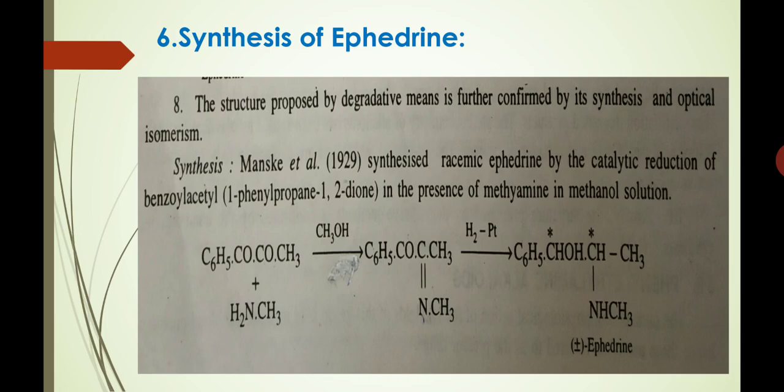The structure proposed by degradative means is further confirmed by its synthesis and optical isomerism. The synthesis was given by Manske and co-workers in 1929. They synthesized racemic ephedrine by catalytic reduction of benzoylacetyl (1-phenylpropane-1,2-dione) in the presence of methylamine in methanol solution, as shown in the equation, giving the racemic mixture of ephedrine.